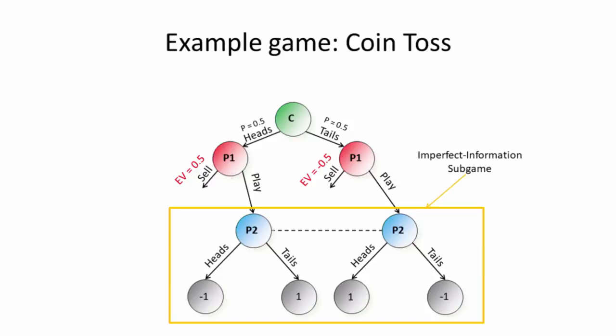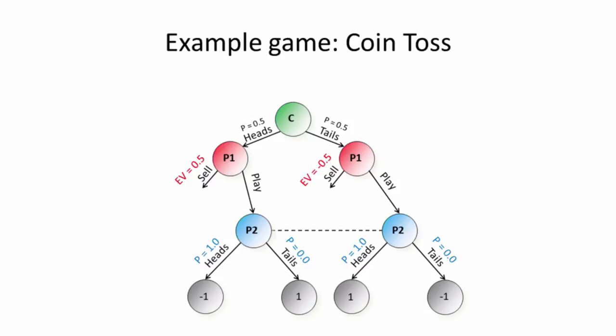So I want you to imagine that you're player two in this game, and you just observe player one choose this play action. So you know you're in this imperfect information sub game. Well, what should you do? What's the right strategy? Well, one option is to just always guess heads. But if you do this, then player one can adapt by always choosing sell when the coin lands heads and getting $0.50, and always choosing play when the coin lands tails and getting $1. So on average, player one is getting $0.75.